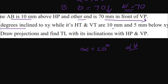HT and VT are 10mm and 5mm below XY respectively. The horizontal trace in the front view — H-dash is always on the XY line. The horizontal trace in the top view: looking at the XY line in the top view, it is 10mm below the XY line.